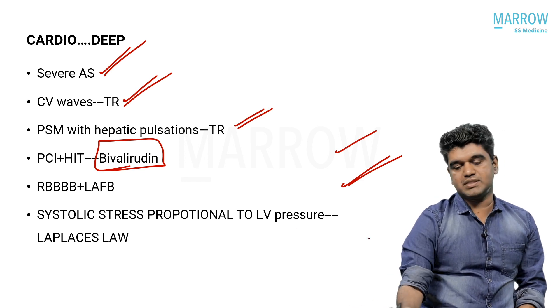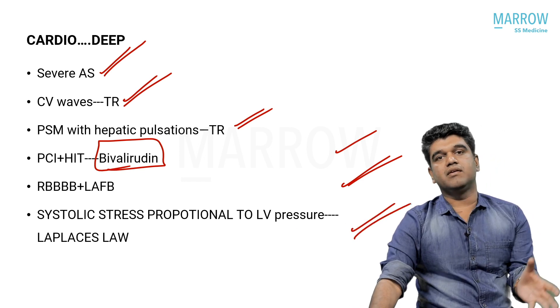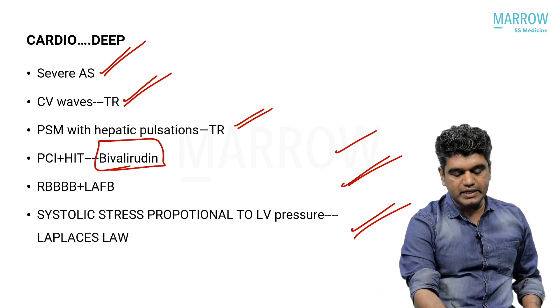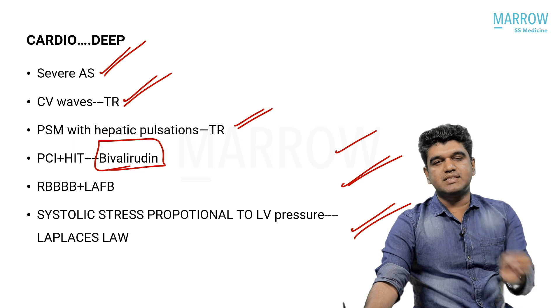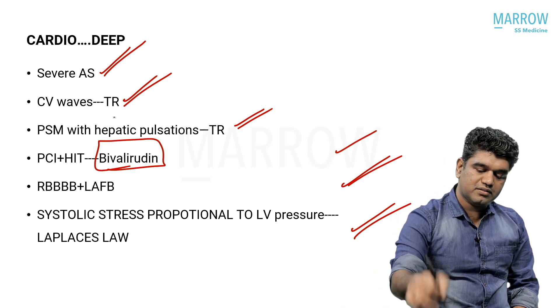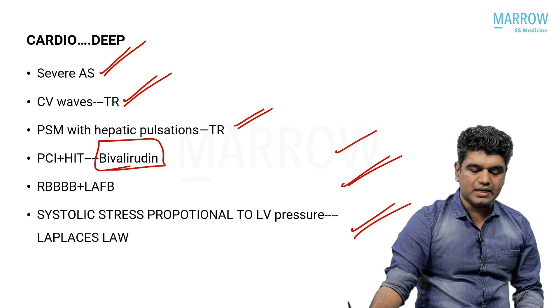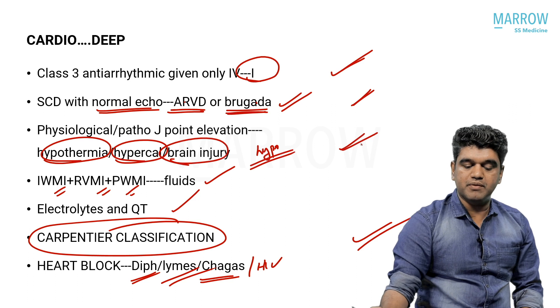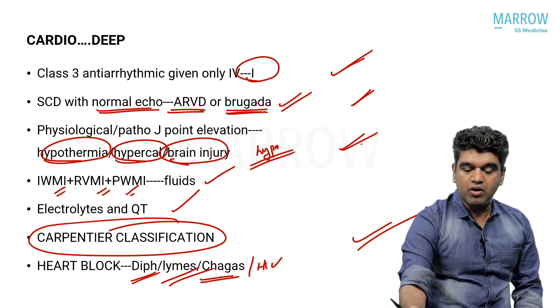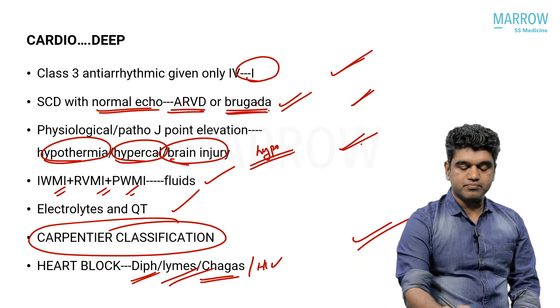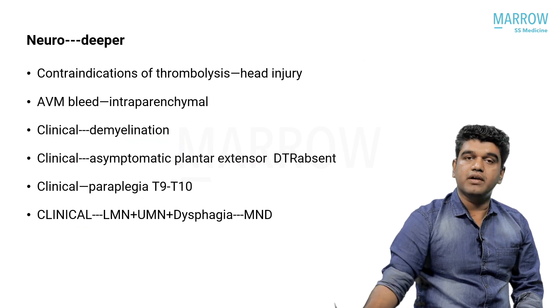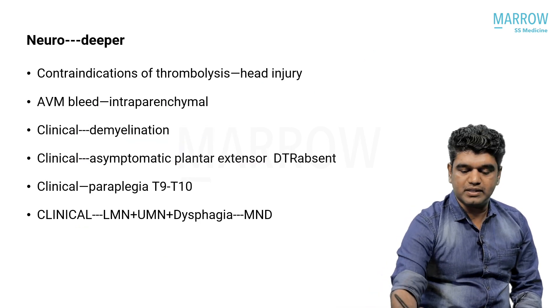Systolic stress proportional to LV pressure — Laplace's law — also well explained by Nishan. If you actually watch cardiology in detail, you get that understanding which lets you answer four or five extra questions that can make a real difference — six or seven questions almost. TR and basic findings everyone can answer with MD-level knowledge, but the other questions like Carpenter classification, hypothermia with J-point elevation, Brugada, or ibutilide are rank-determining questions.